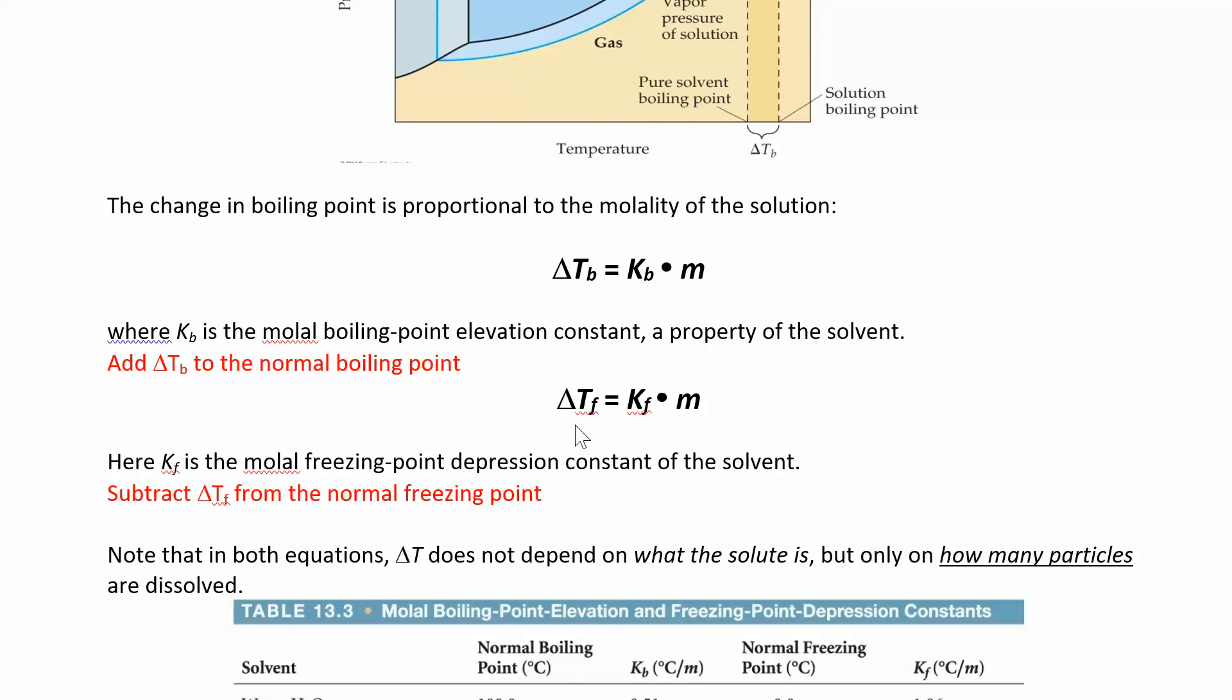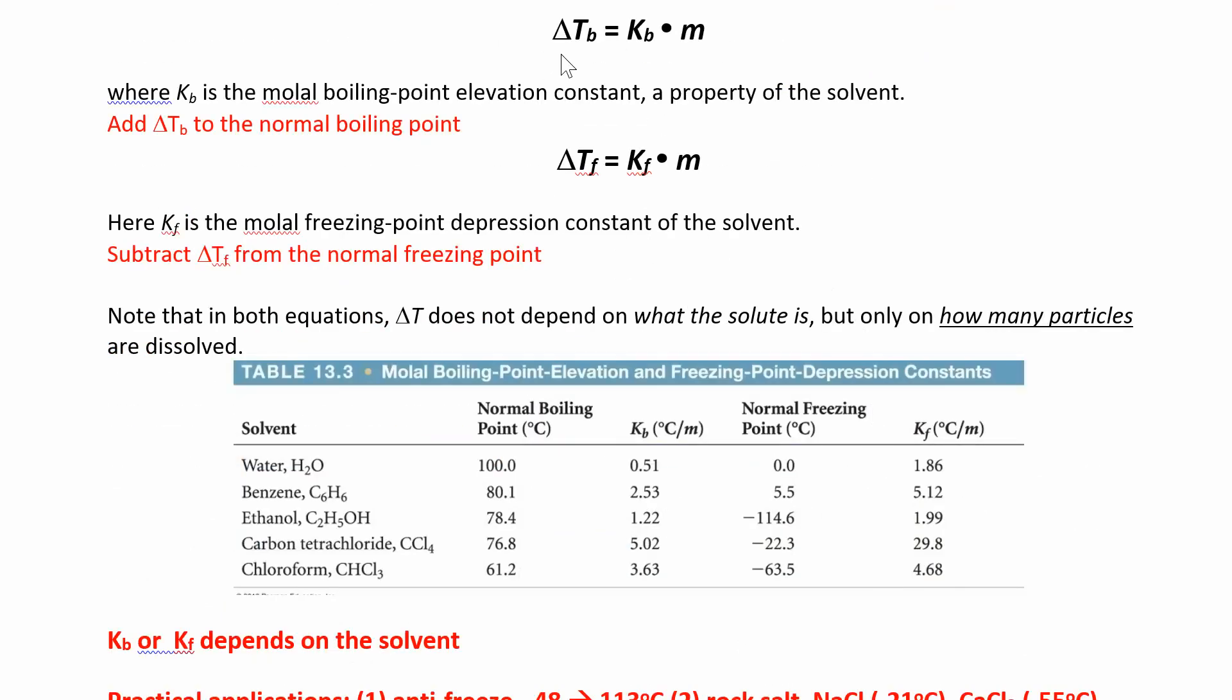Water will boil at 100 degrees Celsius and the freezing point of water is zero. So you're going to find this delta Tf and subtract that from zero, minus the delta T. Your freezing point always gets lower, your boiling point always gets higher. So whenever we have a solution where water is the solvent, the boiling point is going to go up and the freezing point will go down. The boiling point will be over 100, the freezing point will be less than zero.